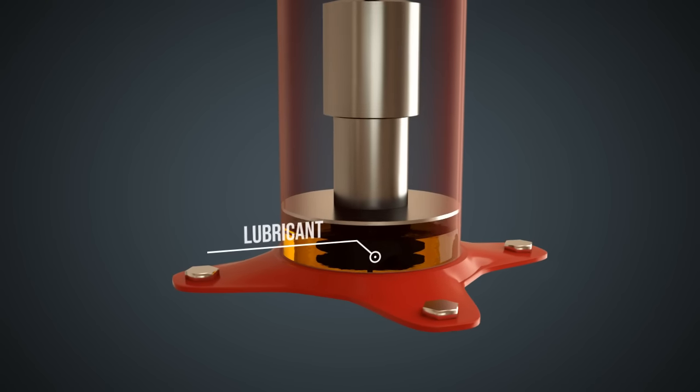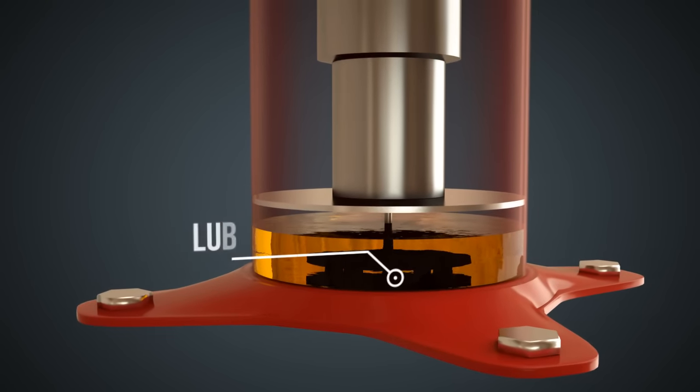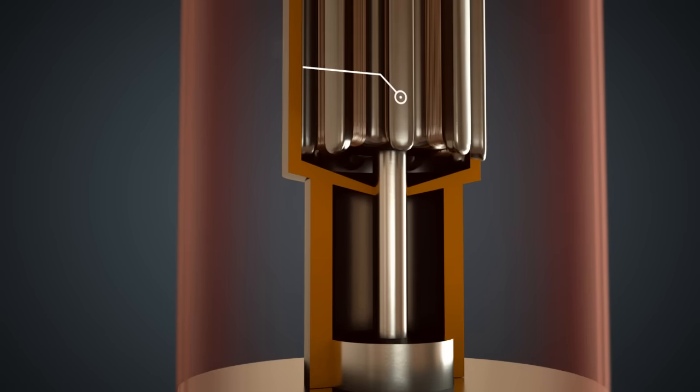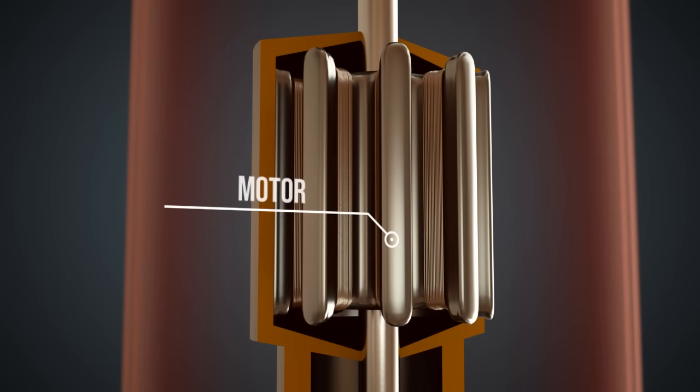The lower part of the shell contains the lubricant, which is used for example to lubricate the plane bearings. A motor sets an Archimedean scroll, which is found in the upper part of the shell, in motion.